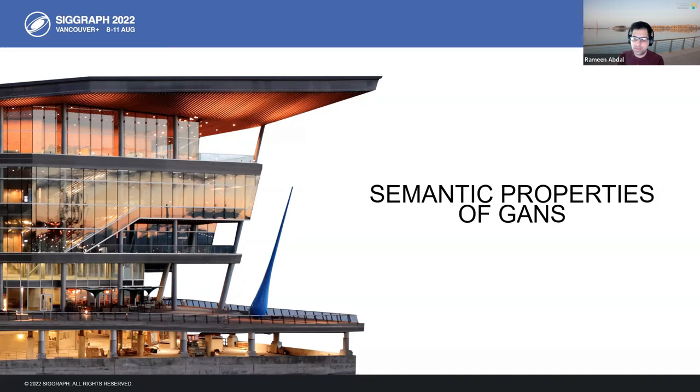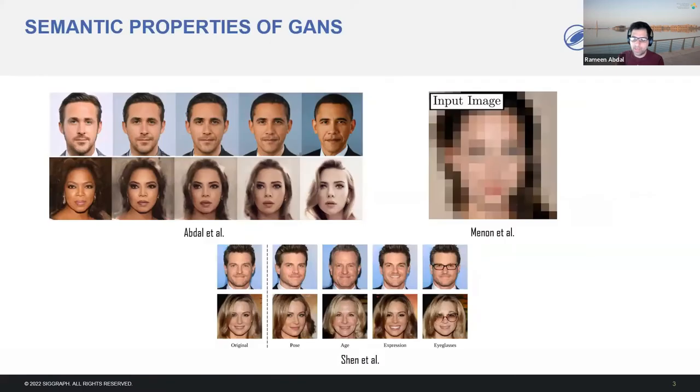First, let us look at some semantic properties that state-of-the-art GANs like StyleGAN hold. There are many semantic properties of GANs, especially StyleGAN. StyleGAN has been used to perform various tasks like image morphing, image super-resolution, and image editing. The high-quality results achieved on such downstream tasks using GANs have been attributed to several design choices and architectures and availability of high-quality datasets like human faces.